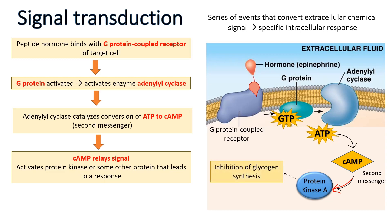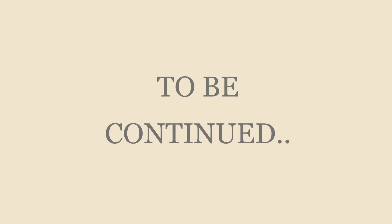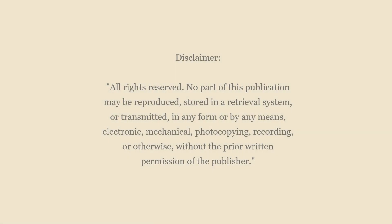Protein kinase A will promote glycogen breakdown and inhibit glycogen synthesis. Glycogen breakdown produces glucose, which increases blood glucose level and is released into the blood. This is the mechanism by which epinephrine causes liver cells to secrete glucose during a fight-or-flight response. Epinephrine can also cause other responses, such as affecting gene activity, altering metabolism, or causing opening or closing of ion channels.